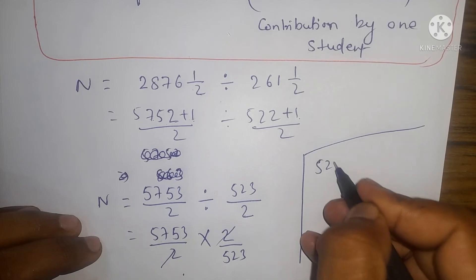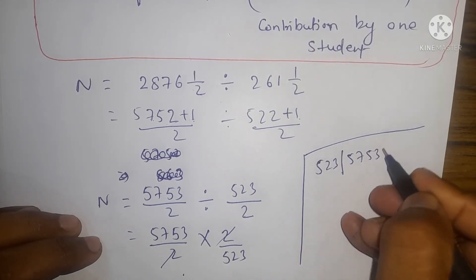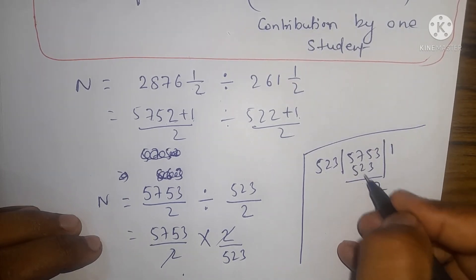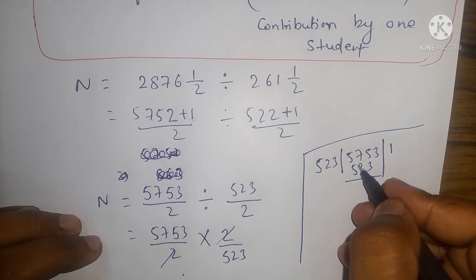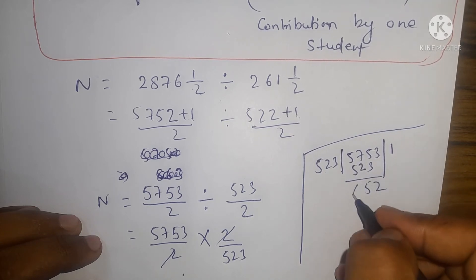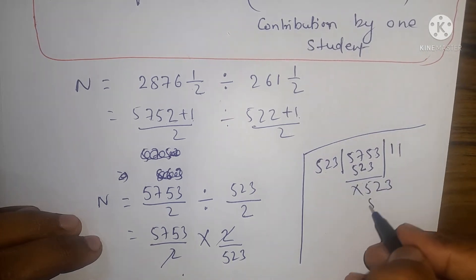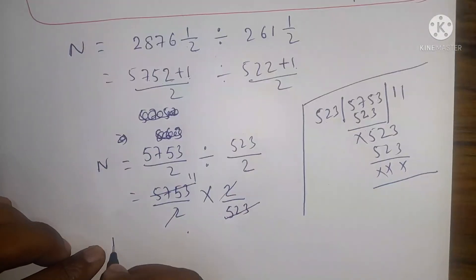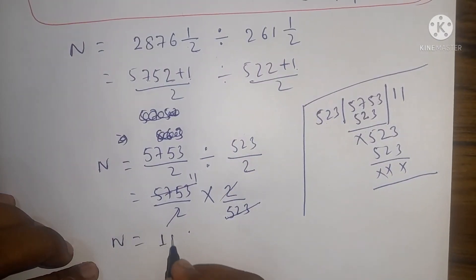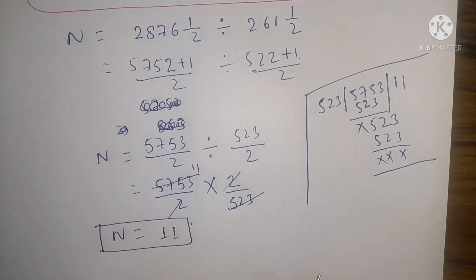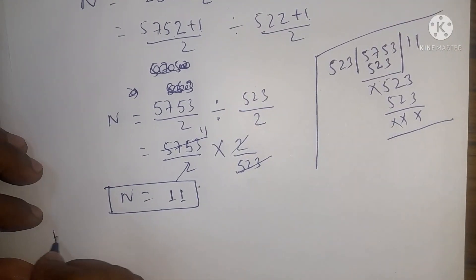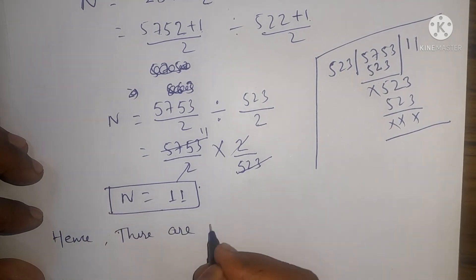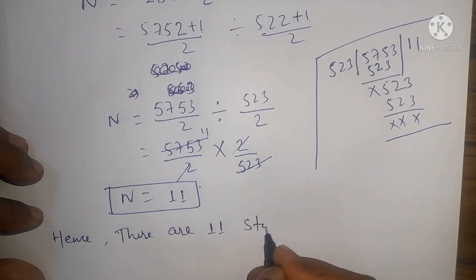5, 2, 3, 5, 7, 5, 3, 5, 3 divided by 1, then all is cancelled. See, it cancels 11 times. N equals 11. N is what? Total number of students participating in the picnic. Hence, there are 11 students participated in the group of picnic.